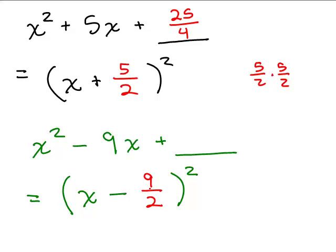So just write it as 9 halves, and so what gets added up here? 9 halves times 9 halves, 81 fourths.